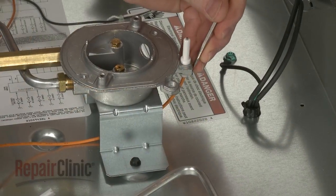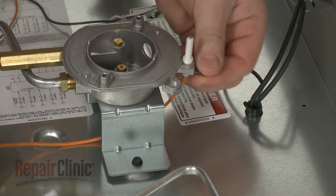Now slide out the electrode retainer and you can remove the old electrode from the orifice holder.